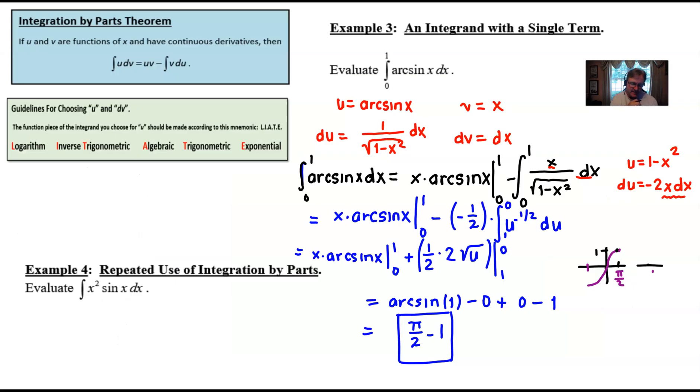So as we discovered the answer pi over 2 minus 1 is indeed correct and congratulations because you've just integrated your first inverse trig expression and you're going to find out that the other inverse trig expressions will probably integrate in a very similar way and use this u substitution idea in order to complete it. As you can see in our next example number four we've got a treat in store for you where we're going to use a repeated use of integration by parts so definitely stick around for the solution to example four in a future video. Thanks for tuning in.